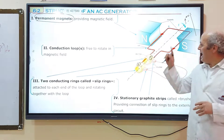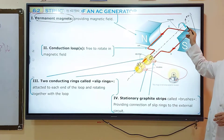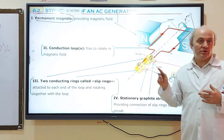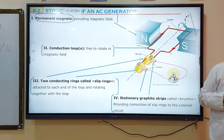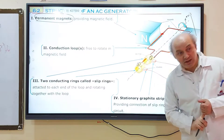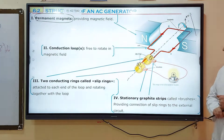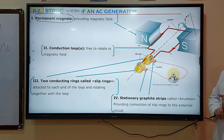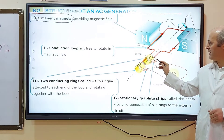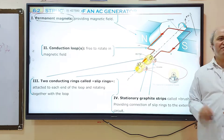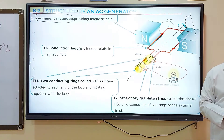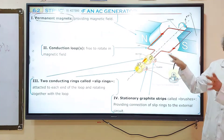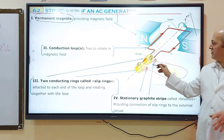Because the ends are attached, as the loop rotates, these rings also rotate together with the loop. The fourth component is stationary graphite strips called brushes — Brush A and Brush B. They are fixed and stationary; they don't move. You screw them onto a surface and keep them attached.